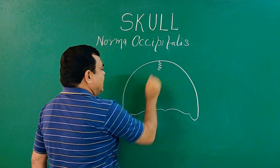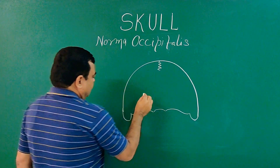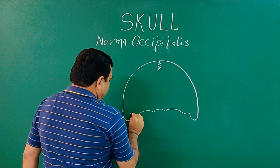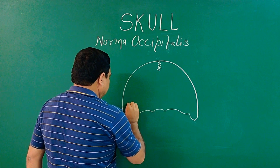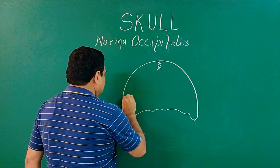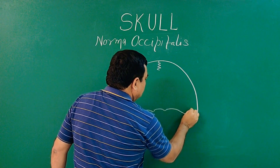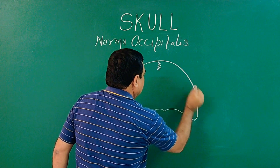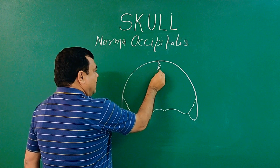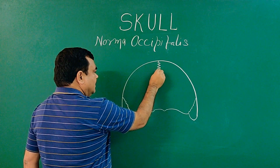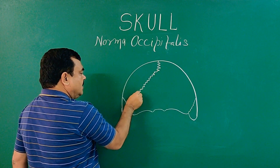Here we have a sagittal suture — this is the sagittal suture. And here is the lambdoid suture; this suture is the lambdoid suture.